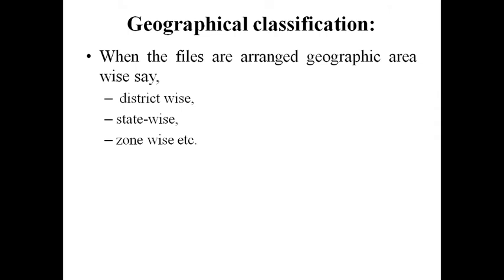There is another method of classification based on geographic area — say district, state, zone-wise, or country-wise. When files are arranged geographic area wise, such as district-wise, state-wise, or zone-wise, it is called geographical classification.